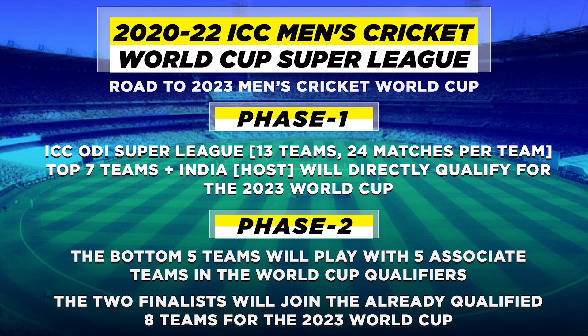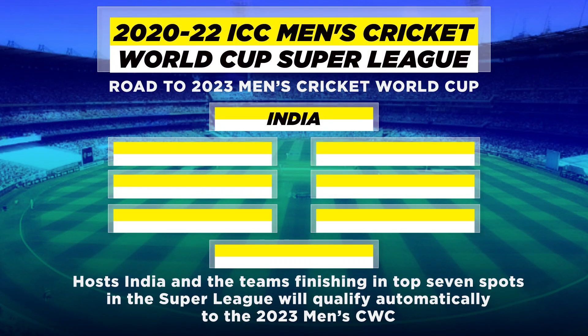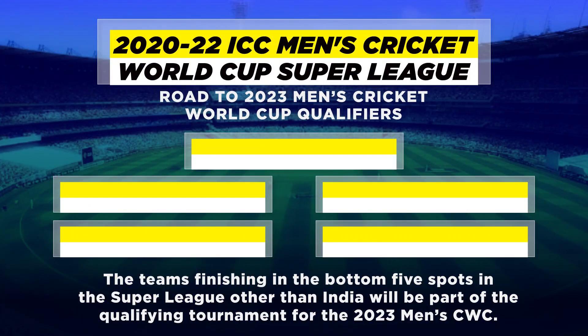That would leave 5 more teams. Those 5 teams, plus another 5 teams from the Associated Nations, will get together and play the qualifiers. The qualifiers would be Phase 2, and out of that qualifier, there will be 2 teams which will qualify. The finalists will qualify for the World Cup in 2023. So a total of 10 teams in the 50-overs format — 8 teams qualify directly, the top 7 plus the host India, and 2 teams qualify through the qualifier.